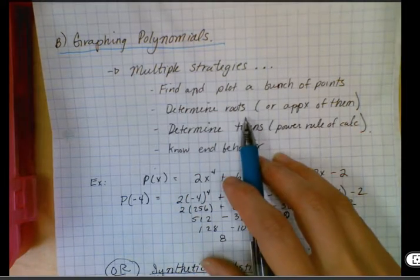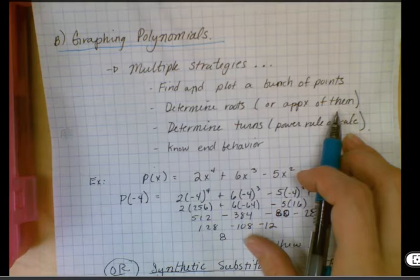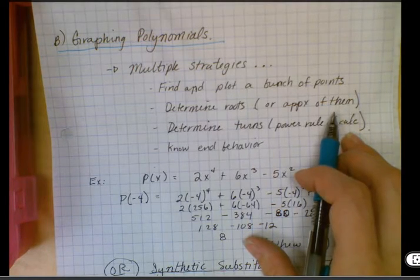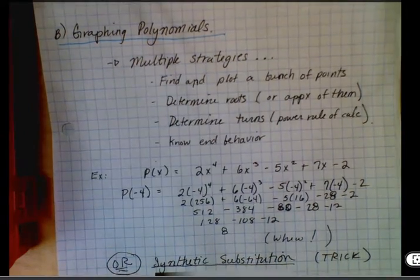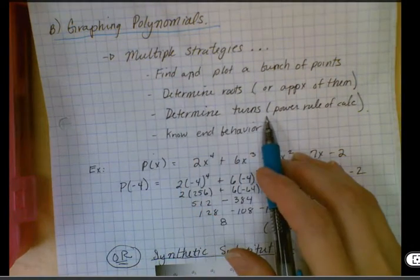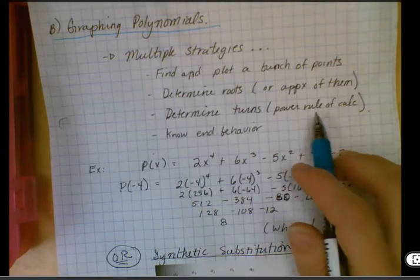We can figure out the roots, or approximate where they might be. So if we knew that it lived between negative two and negative one, that at least gives us an idea of where it is. And then we can determine where the turns are, which is where we did a little bit of this last year, where we used the power rule.